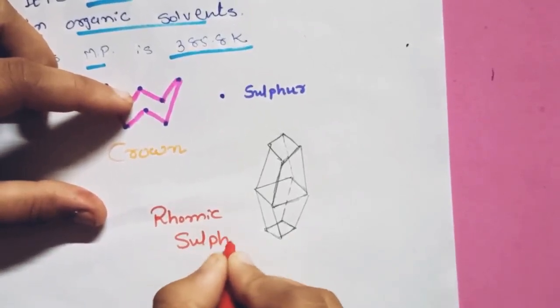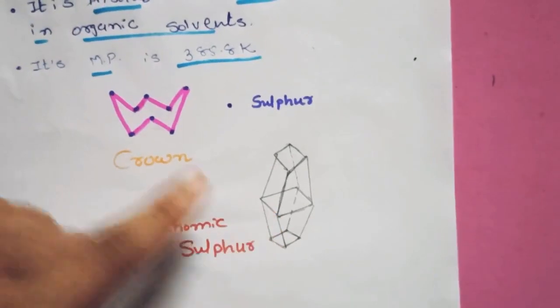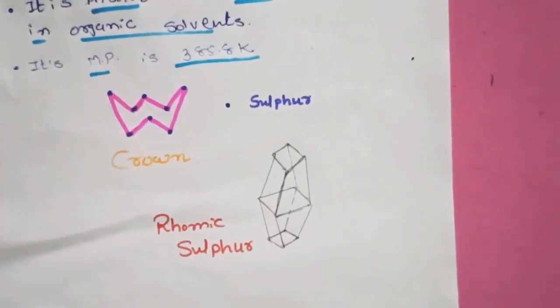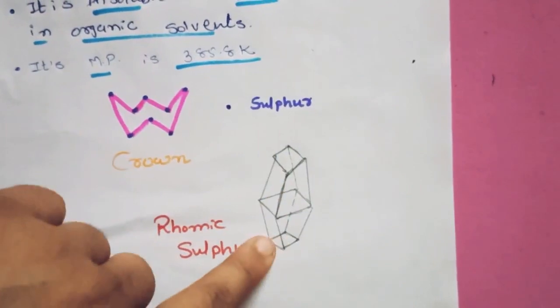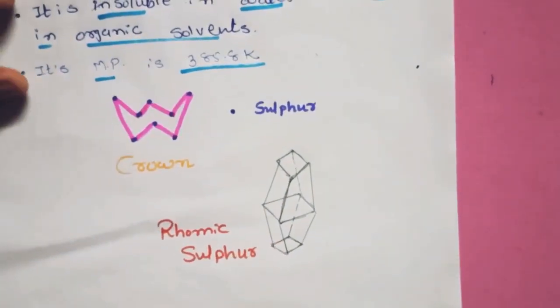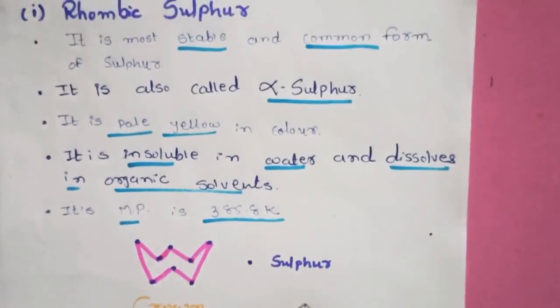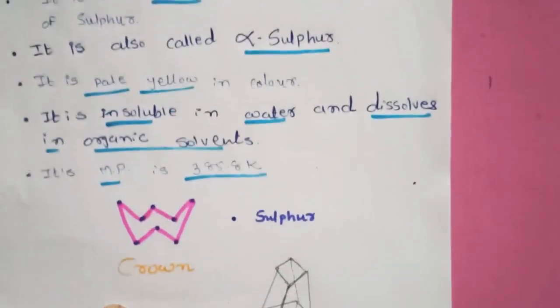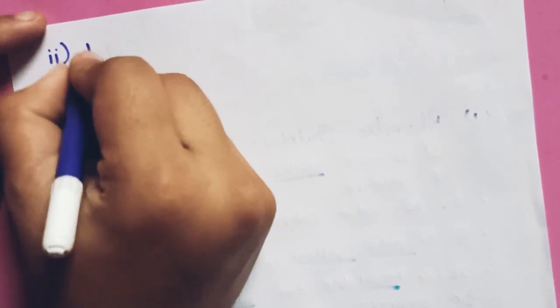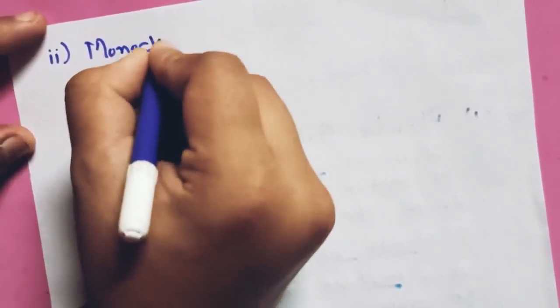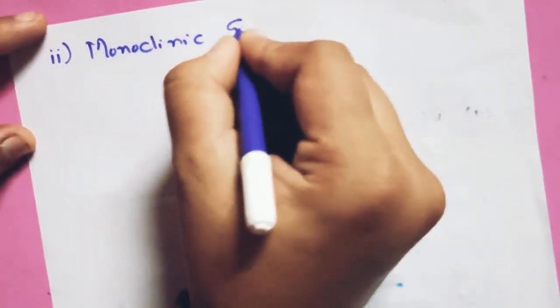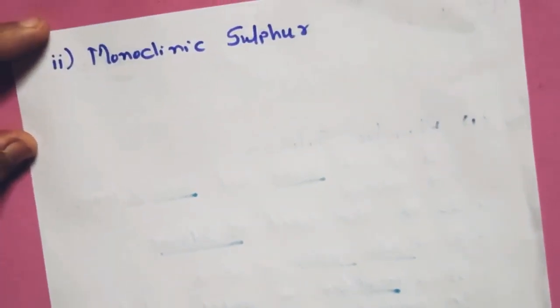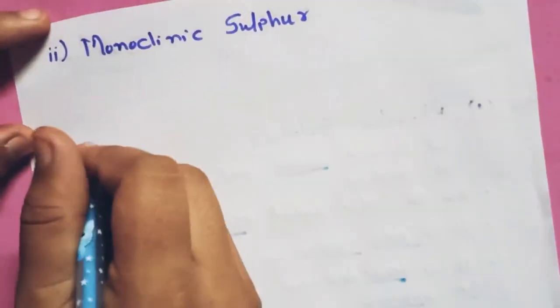Rhombic sulfur — if you place the crown structures one on top of another, you will get the rhombic structure. This is a crystalline form. So that was the first allotrope — rhombic sulfur.